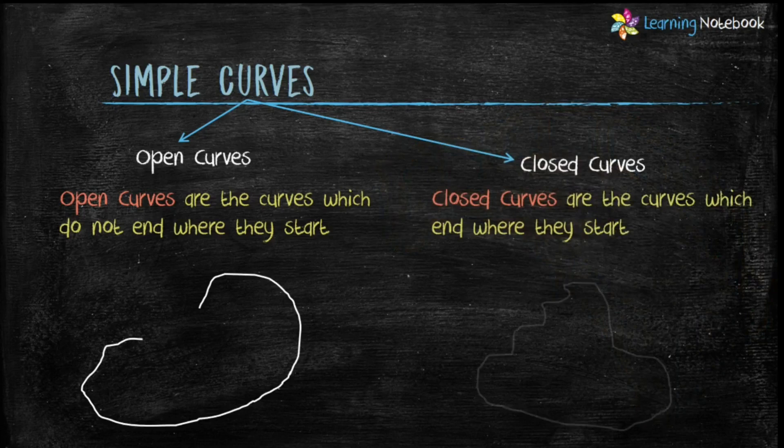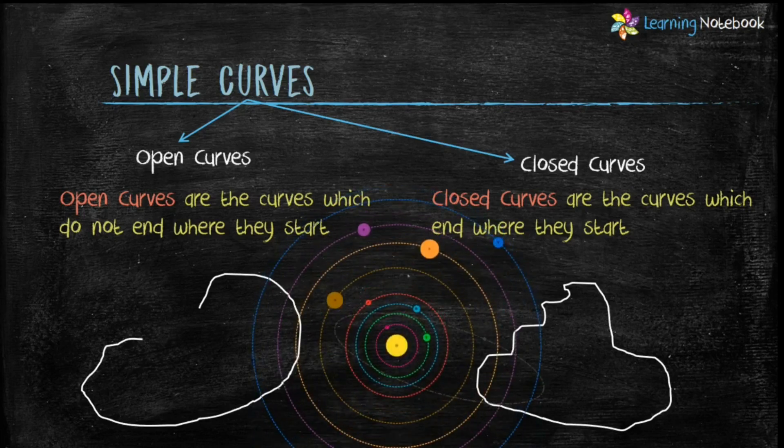Then we have closed curves. Closed curves are the curves which end where they start. For example, curves of orbiting planets. Orbits of the planets end where they start.